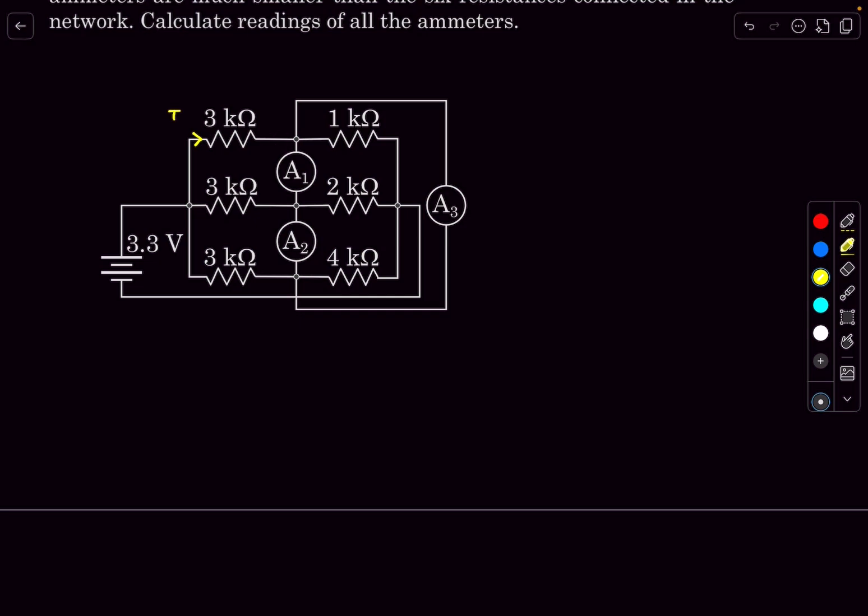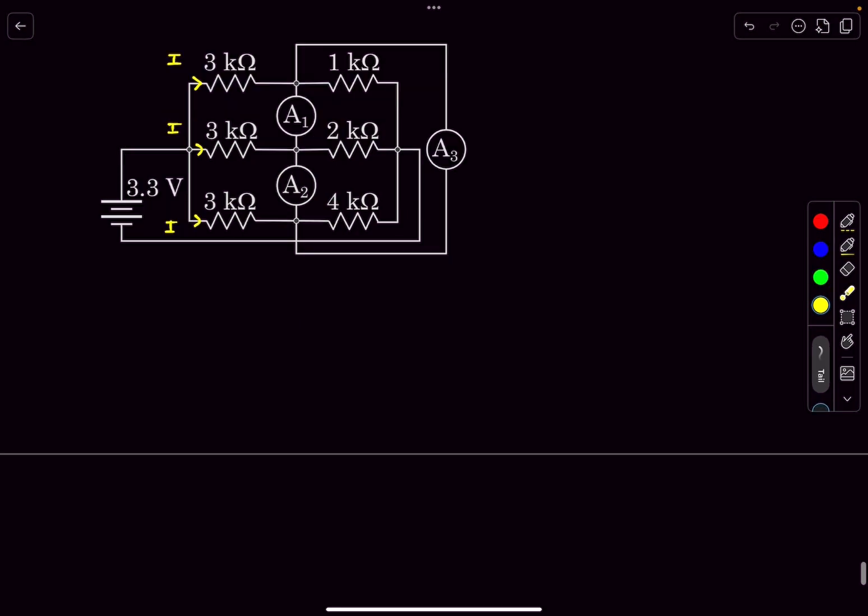So let's just say the current in this branch is i, so the current in all these branches must also be i, which means the current which is leaving from the battery is 3i. Now similarly the one kilo ohm, two kilo ohm and four kilo ohms are in parallel.